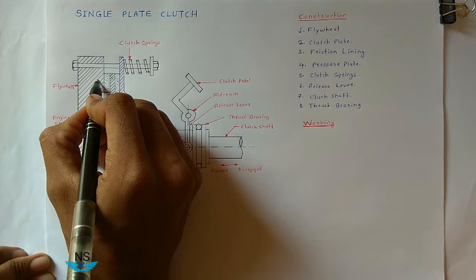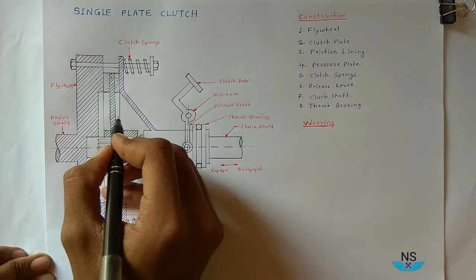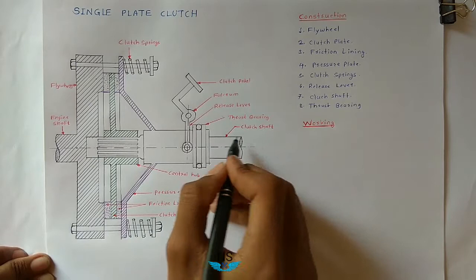When the pressure plate moves away from the clutch plate, the clutch plate gets disengaged and disconnects from the flywheel. As a result, the engine shaft and the input shaft of the gearbox get disengaged.